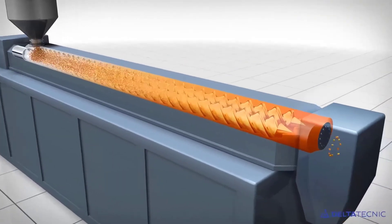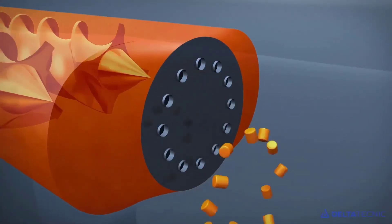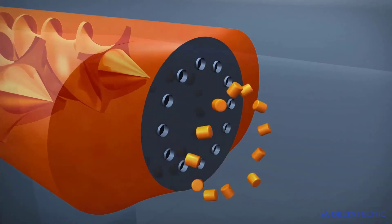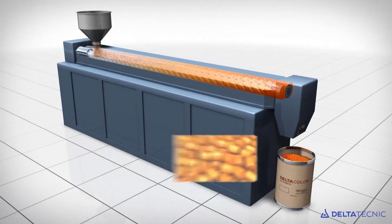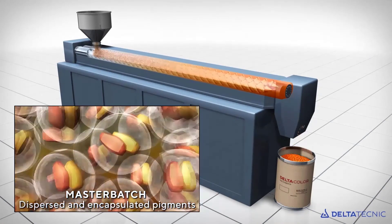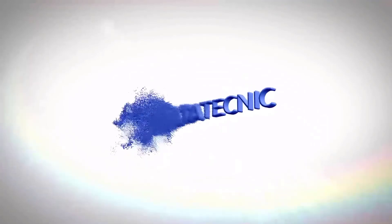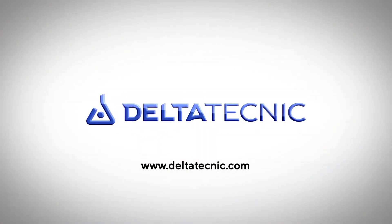A bunch of those encapsulated crystal units are then formed into pellets at the cutter head, as you can see here. At a microscopical level, you can see how those single crystal units are encapsulated. This is how dispersion is done in order to provide a perfect masterbatch.